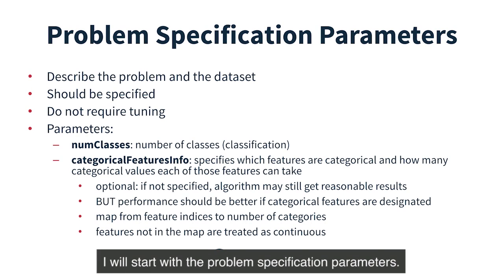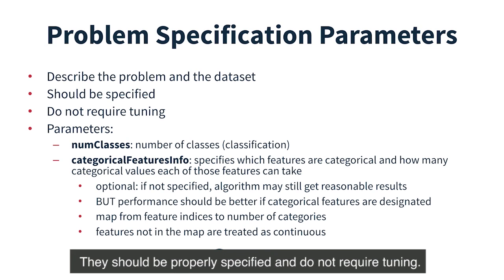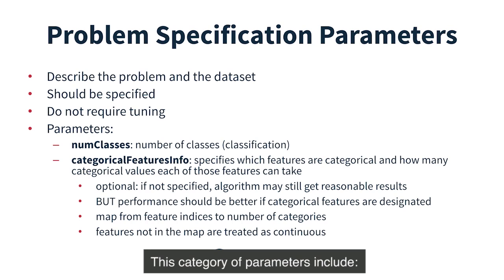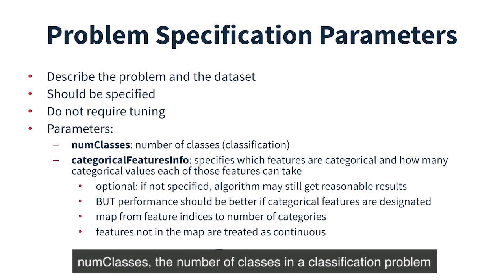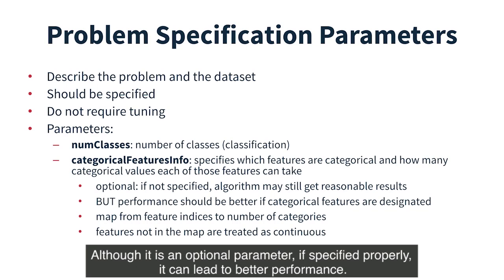I'll start with the problem specification parameters. As their name suggests, they describe the problem and the dataset. They should be properly specified and do not require tuning. This category of parameters includes num classes — the number of classes in a classification problem — and categorical features info, an optional parameter that specifies which features are categorical and how many categorical values each of those features can take. Although optional, if specified properly, it can lead to better performance.